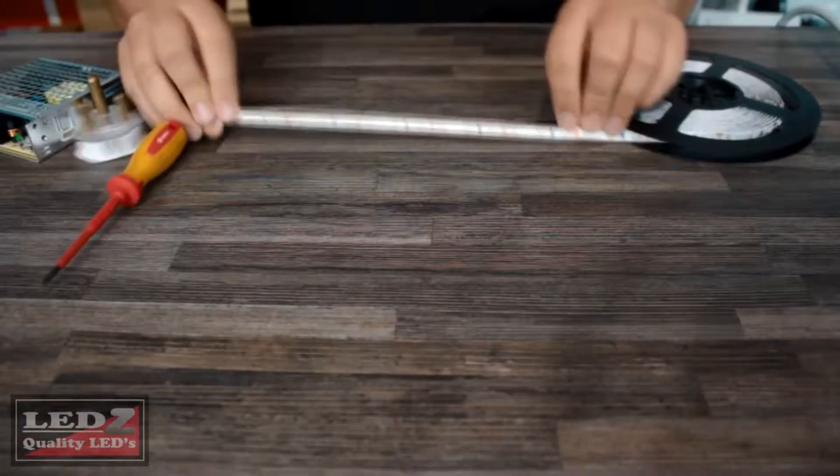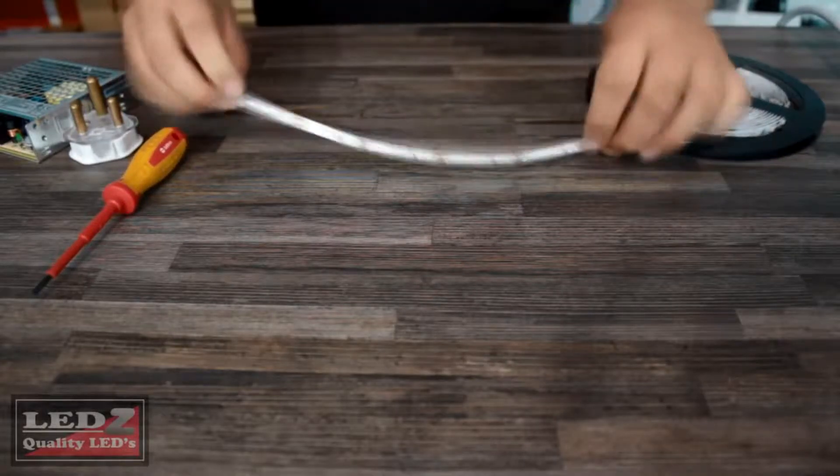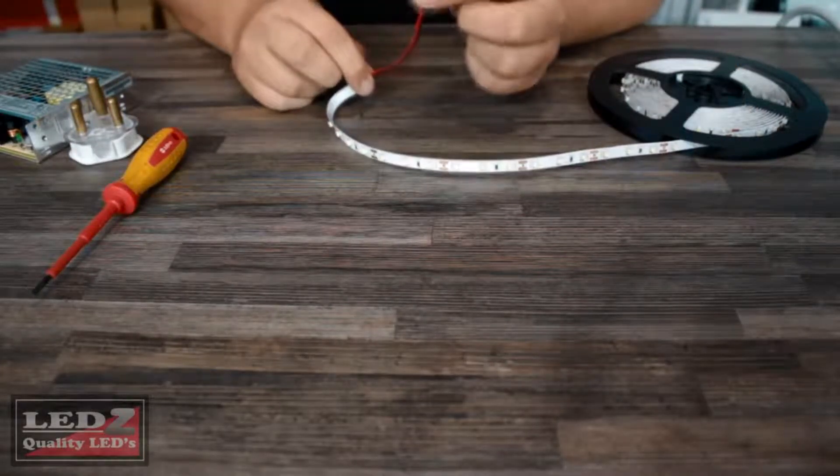So in this video, this is what we would call LED strip lights. The red and the black cable on the end here is your power cord.